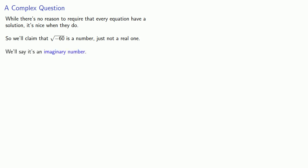So let's consider the following complex question. While there's no reason to require every equation have a solution, it's nice when they do. And so for now, we'll claim that square root of negative 60 is a number, just not a real one. We'll say it's an imaginary number. And we can go a little bit further. If n is a negative number, if n is less than 0, then we say that square root of n is a pure imaginary number. This means that the square root of any negative number is a pure imaginary numbers.